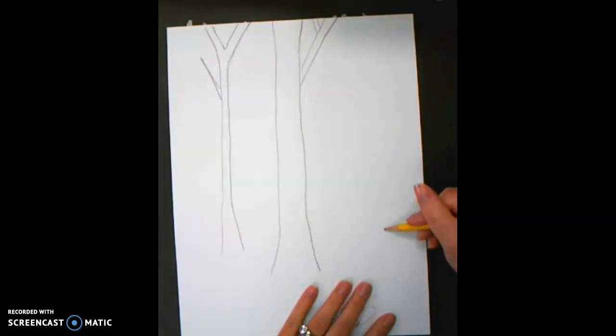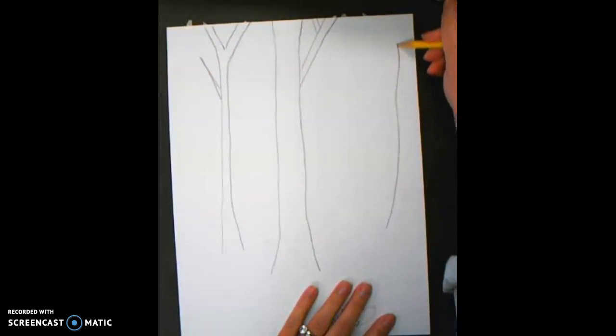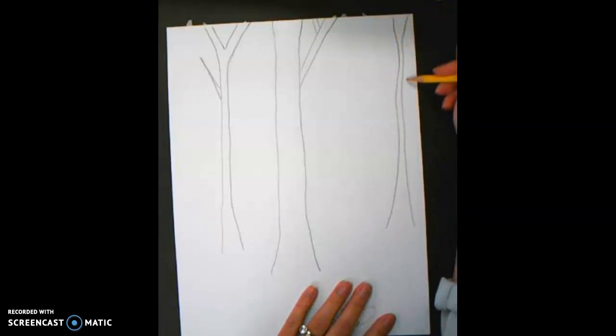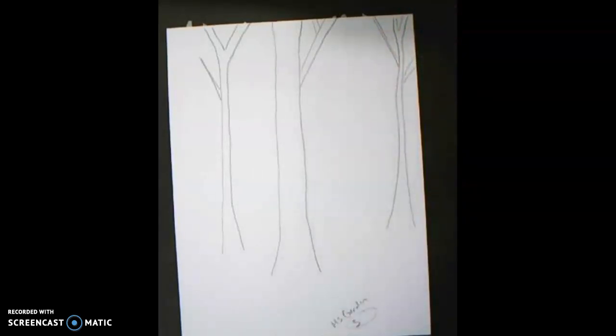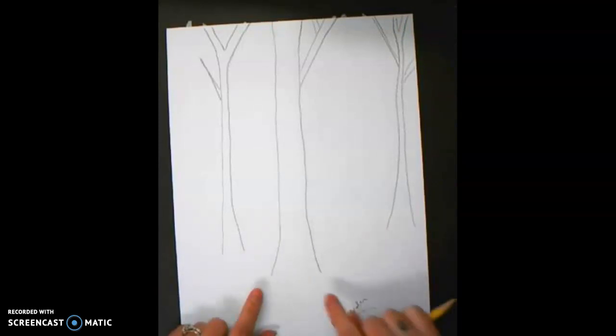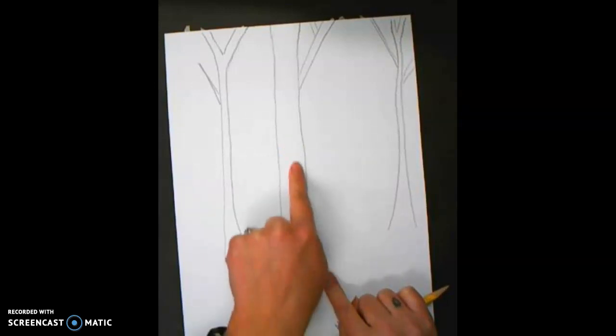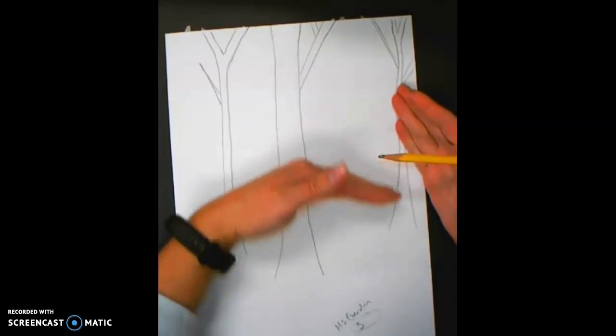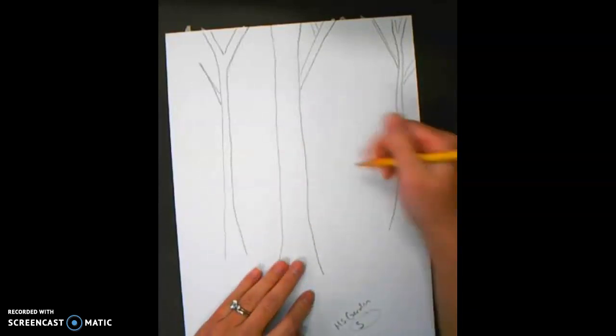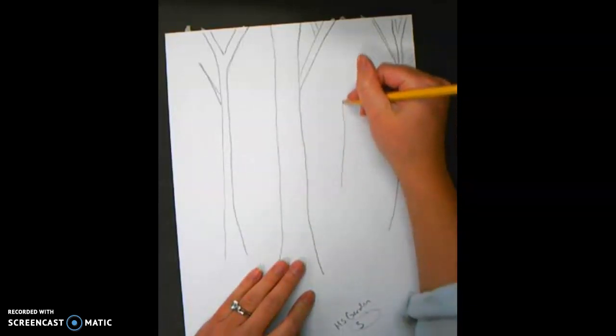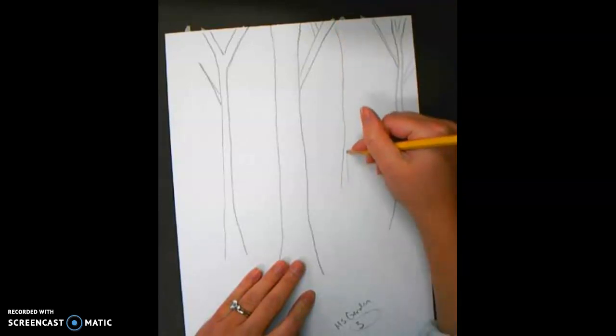Same thing on the other side. Maybe this one I'm going to put a little closer over here. His branches are going to go right off the page. Just drawing your trees anywhere you think works. Notice that the base of my tree is a little bit wider than the trunk. Next, I'm going to move it up just a little bit further to the middle or background of my picture and make a skinnier tree. This is going to be our smallest trees.